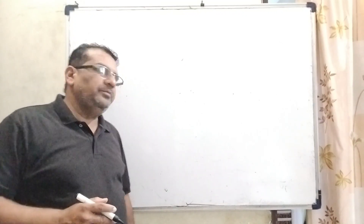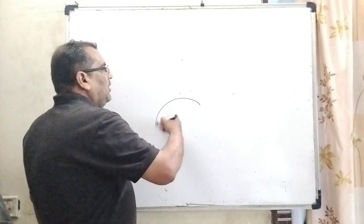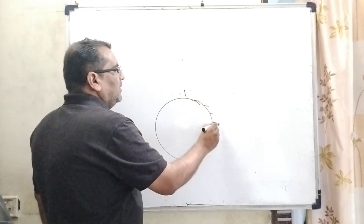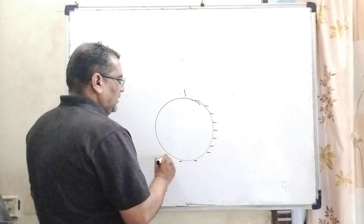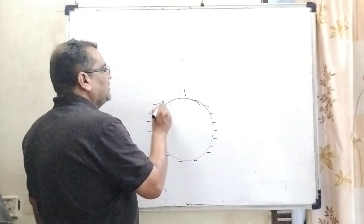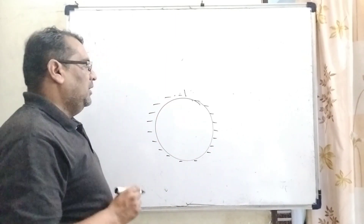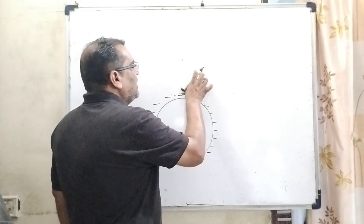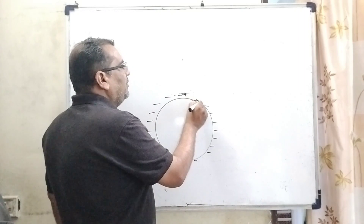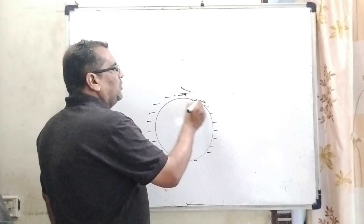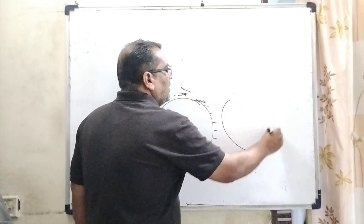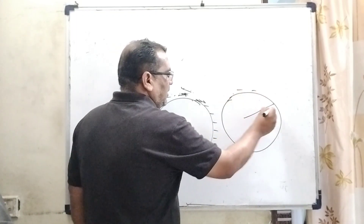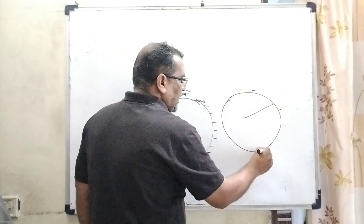As per the question, this is a bubble, and whenever we give charge on the surface, the charge density increases. As per the electrostatic force, the like charges repel each other. So they keep maximum distance, and therefore this bubble increases in area to maintain the maximum distance between the charges.